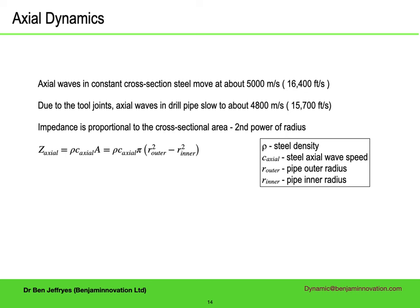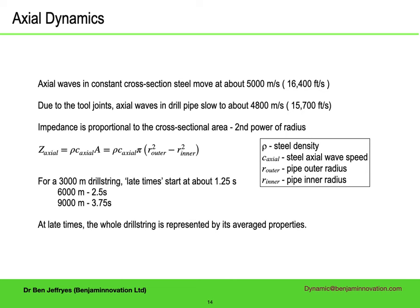The crucial property for studying axial vibration in drill strings is the axial impedance. This depends on the properties of the material — almost always some kind of steel, with a density of about 8000 kg per cubic metre — and also the cross-sectional area of the pipe. The impedance is the most important property at early times. Changes in impedance lead to reflections, so changes in area, such as between the collars and the drill string, produce reflections. For a 3 km drill string, late times begin at about 1.25 seconds; for 6 km, about 2.5 seconds; and for a very long 9 km drill string — unusual but not unheard of — nearly 4 seconds.